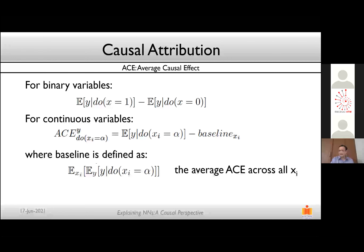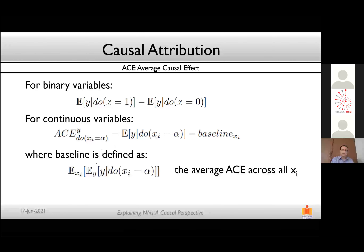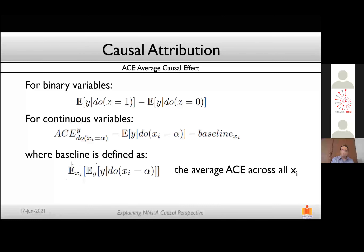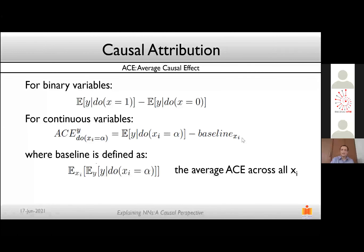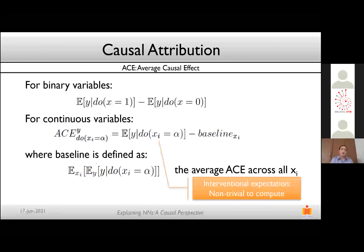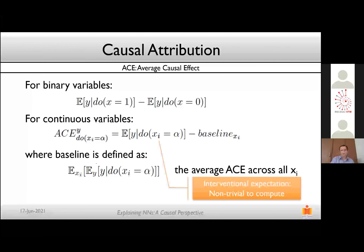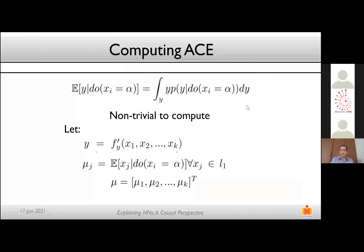Of course you can replace this baseline with domain knowledge if available. The first term in the ACE is called the interventional expectation — you intervene and then compute the expectation, which is difficult because you have to let all other variables vary over all possible values and measure Y. This is formally defined but non-trivial to compute. To address this, we begin with a few definitions: Y is the neural network output, F' is the causal function, and mu_j is the interventional mean of Xj given intervention on Xi.